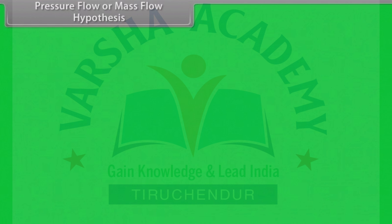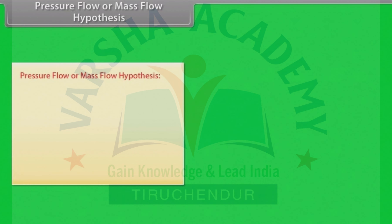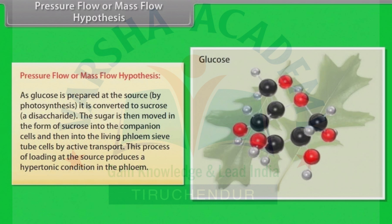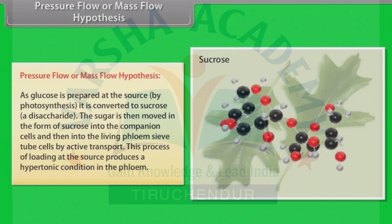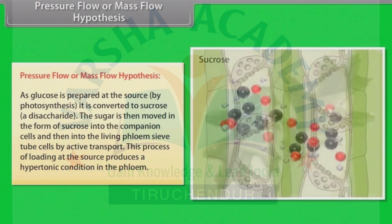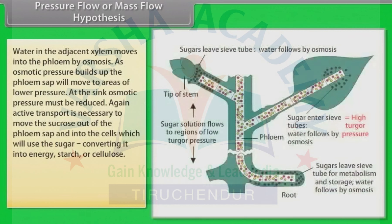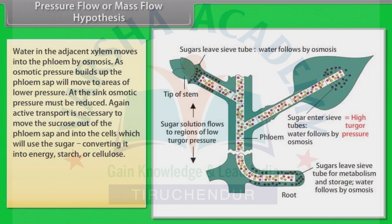Pressure flow or mass flow hypothesis is the accepted mechanism used for the translocation of sugars from source to sink. Glucose is prepared at the source by photosynthesis and is converted to sucrose. The sugar is then moved in the form of sucrose into the companion cells and then into the living phloem sieve tube cells by active transport. This process of loading at the source produces a hypertonic condition in the phloem. Water in the adjacent xylem moves into the phloem by osmosis, and an osmotic pressure builds up, so phloem sap will move to an area of lower pressure.